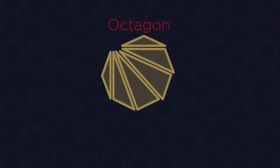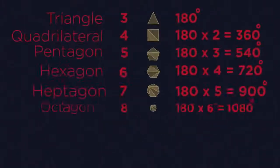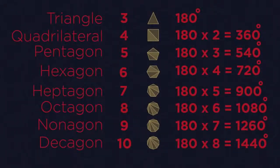Octagons split into six triangles. And so 6 times 180 means there are 1080 degrees in all octagons. For any polygon, there are always two less triangles than there are numbers of sides.